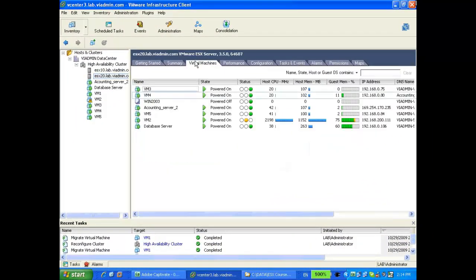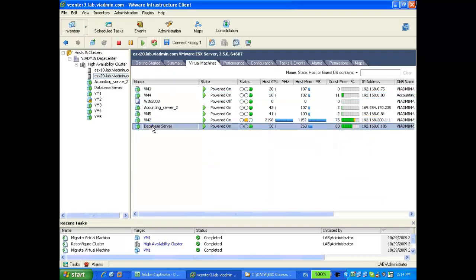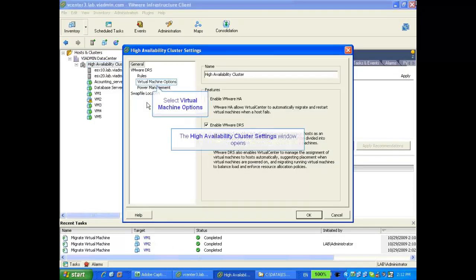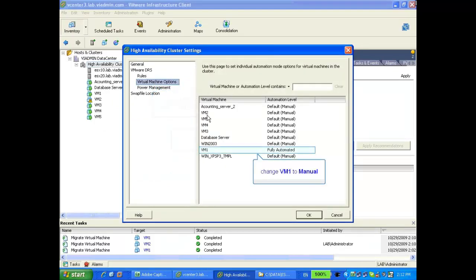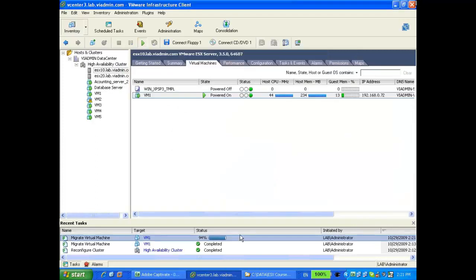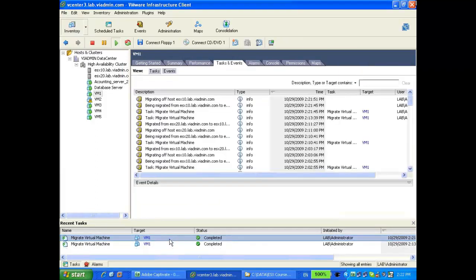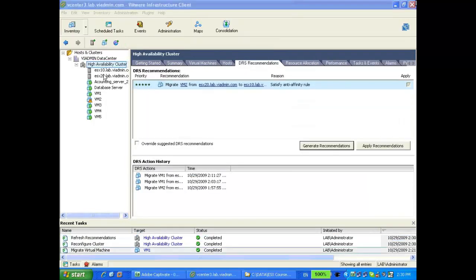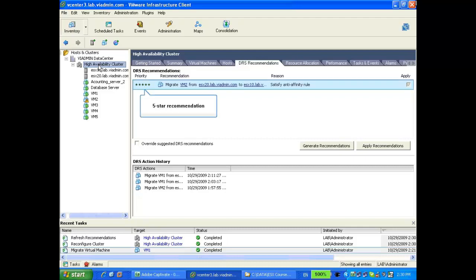And remember, we set up VM underscore 10 to be a fully automated DRS, so DRS is going to move VM underscore 10 whenever it sees fit. Let's go back and change that. I'm going to click on Edit Settings. Let's go back to Virtual Machine Options and change VM underscore 10 from fully automated back to manual, and click OK. Let's see if DRS gives us any recommendations that some virtual machines should be moved. Now, these virtual machines aren't doing too much, but we'll probably see a recommendation.